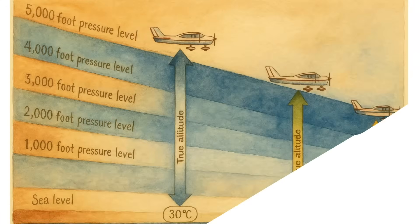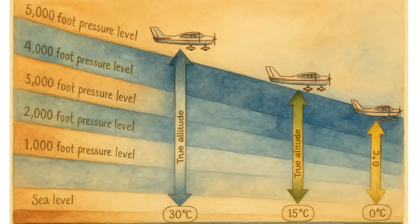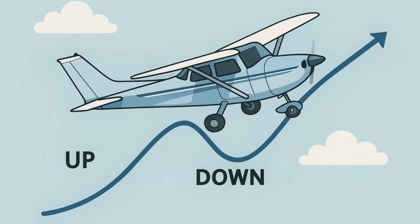For example, when air gets warmer, it expands and gets taller. And when air gets cooler, it shrinks back down and gets shorter. This means that if you climb and descend to follow the altimeter, you will actually be moving up and down slightly as you fly through these pockets of warmer and cooler air. In this situation, the aircraft's true altitude is changing, while your indicated altitude is actually staying the same.